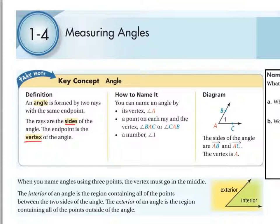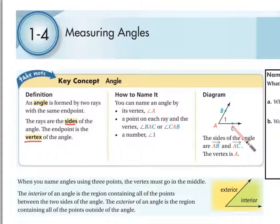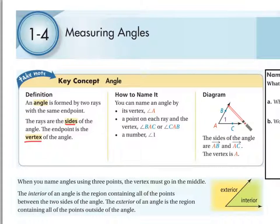If there's more than one angle at a vertex, you have to use our next way of naming angles, which uses three points. The middle point is always the vertex, and the other two points are on the rays that form the angle. For example, angle BAC: B is on one ray, C is on the other, and A is the vertex in the middle. There's nothing wrong with writing it backwards as angle CAB either.